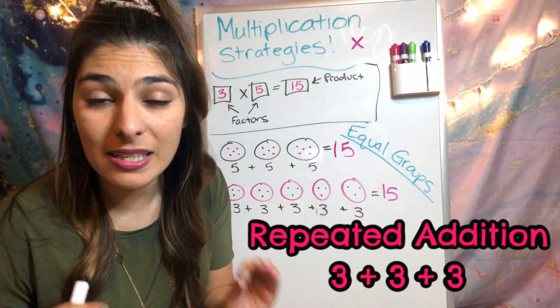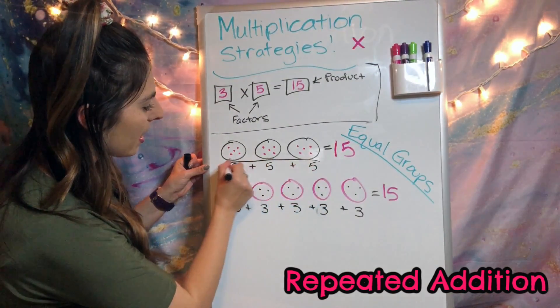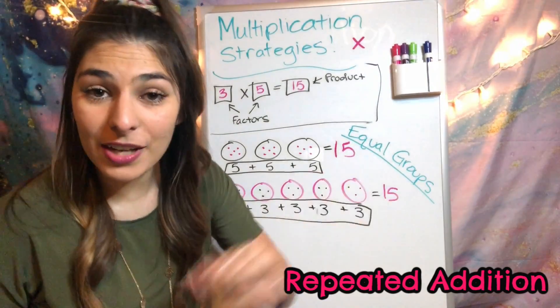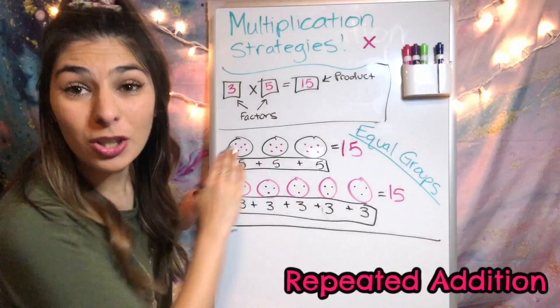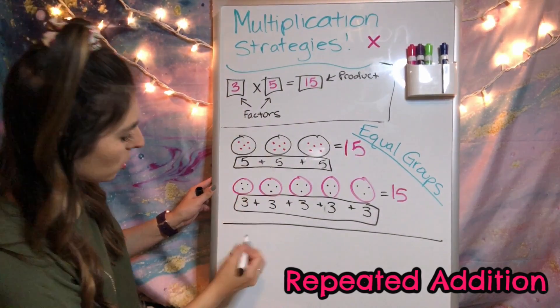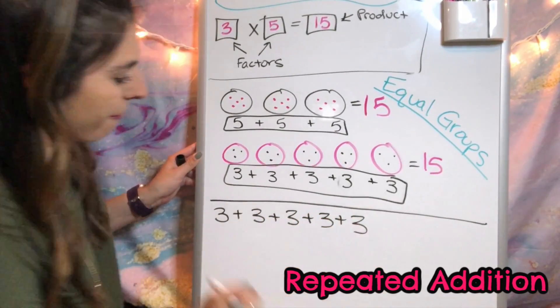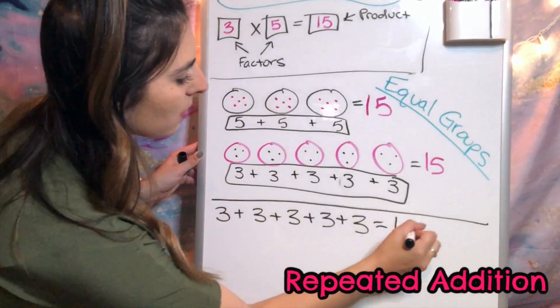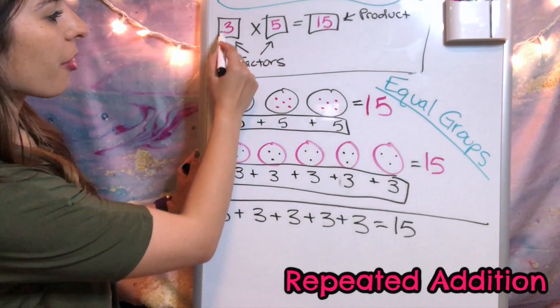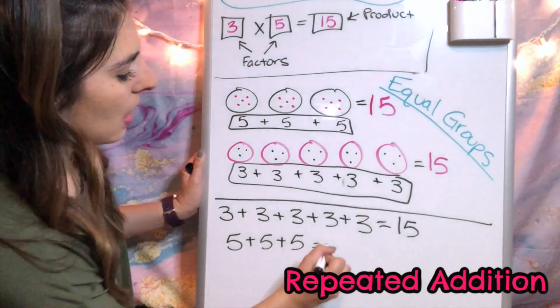Our next strategy is repeated addition, which we can take from our equal groups. We basically just took one number and added it the other factor amount of times. So using the same 3 times 5 equals 15 equation, we're going to do 3, five times: 3+3+3+3+3. If I add those up, I'll find that equals 15. Or I could switch the factors and do 5, three times, which equals 15 as well.